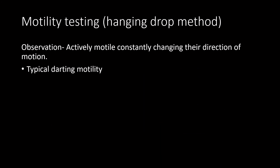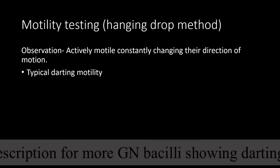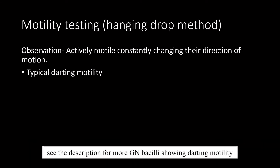We can see many rod-shaped, pink-colored organisms, indicating that the smear shows gram-negative bacilli. Motility testing showed that the organism is actively motile with constant change in direction of motion. Since the organism is showing darting motility and is a gram-negative bacillus, we can consider the organism to be Vibrio cholerae, as it shows the same features.